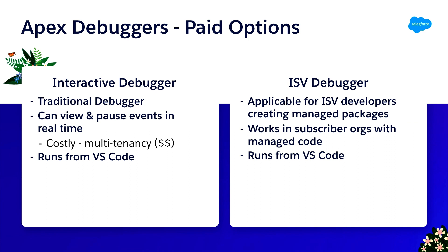Let's talk about some of the specific debuggers we offer, starting with the paid options. On the left we have the Interactive Debugger, which lets you view and pause events in real time — but pausing time in an org is expensive, which is why this has to be a paid product. On the right we have our ISV Debugger — when you're creating managed packages, you're deploying code into your customers' orgs but you can't see that code, so the ISV Debugger makes it possible to debug directly in those orgs. Both run from VS Code, giving you that full IDE experience.